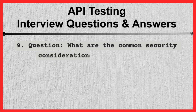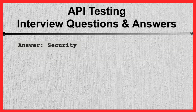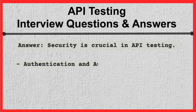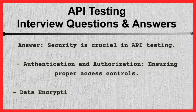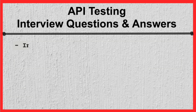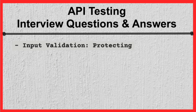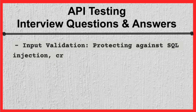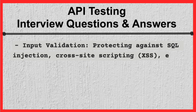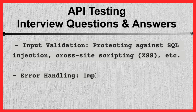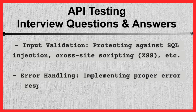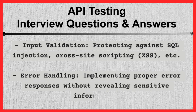Question 9. What are the common security considerations in API testing? Answer. Security is crucial in API testing. Key considerations include: Authentication and authorization — ensuring proper access controls; Data encryption — using HTTPS to encrypt data in transit; Input validation — protecting against SQL injection and cross-site scripting (XSS); Error handling — implementing proper error responses without revealing sensitive information.